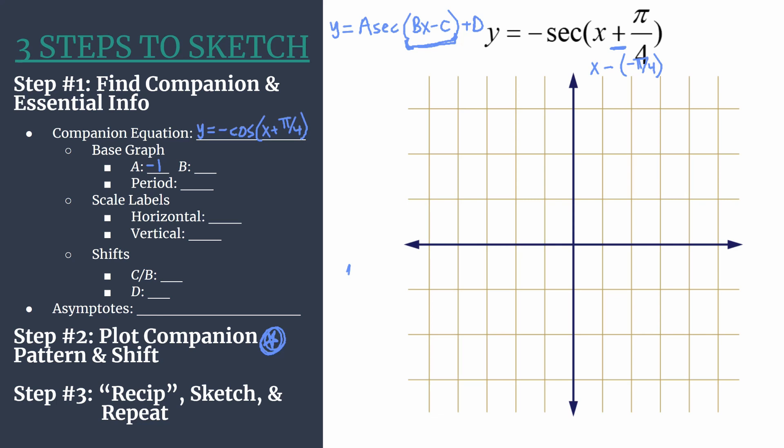For now, it's enough to know we have that vertical reflection, and the A is going to help us set the y coordinates for our maximum and minimums for our companion pattern. B is the coefficient of x, another understood 1 here. That tells us we'll have one cycle of our graph happening between 0 and 2 pi.